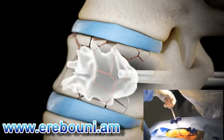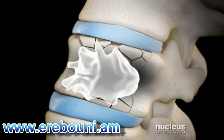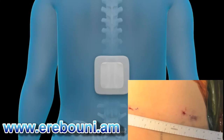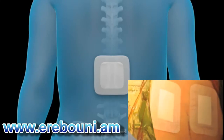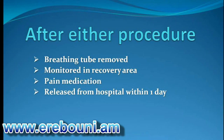At the end of either procedure, your doctor will remove each cannula and cover the tiny skin punctures with a sterile bandage. After either procedure, your breathing tube will be removed if general anesthesia was used. You will be taken to the recovery area for monitoring. Pain medication will be given as needed. You may be released from the hospital the same day or within one day after either procedure.